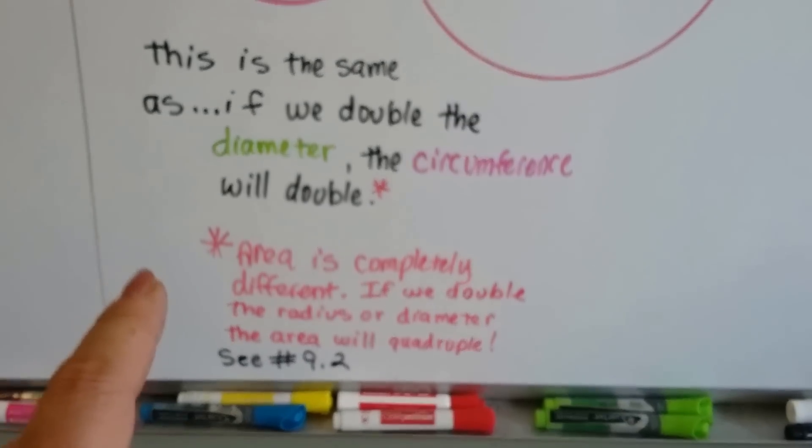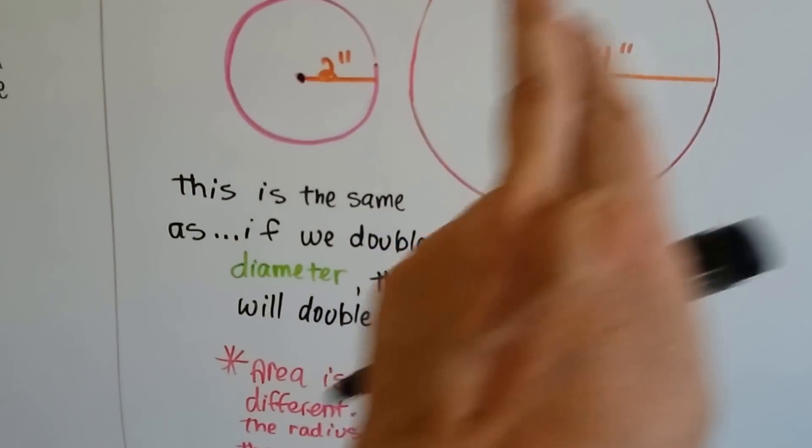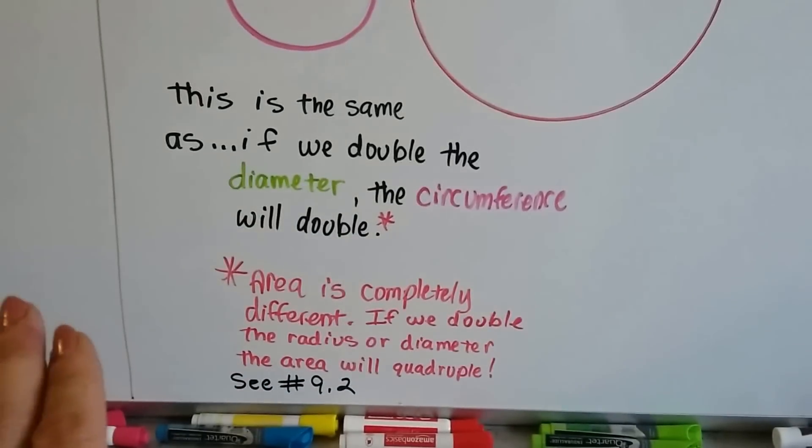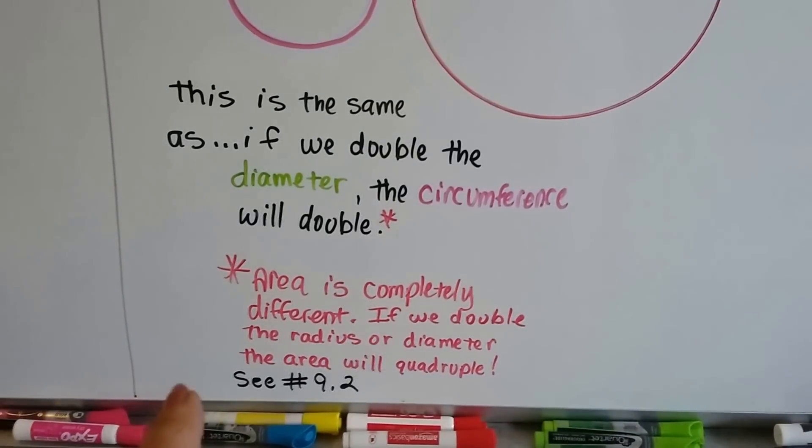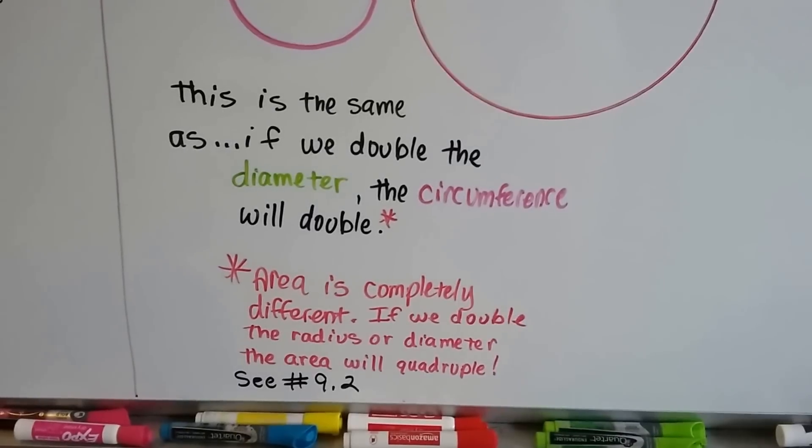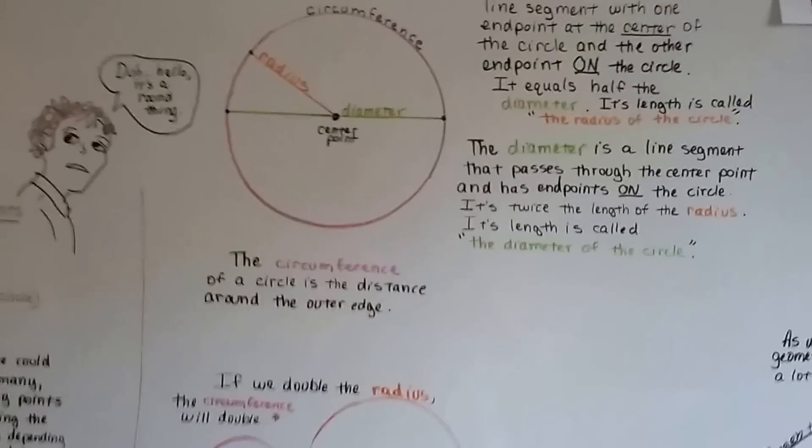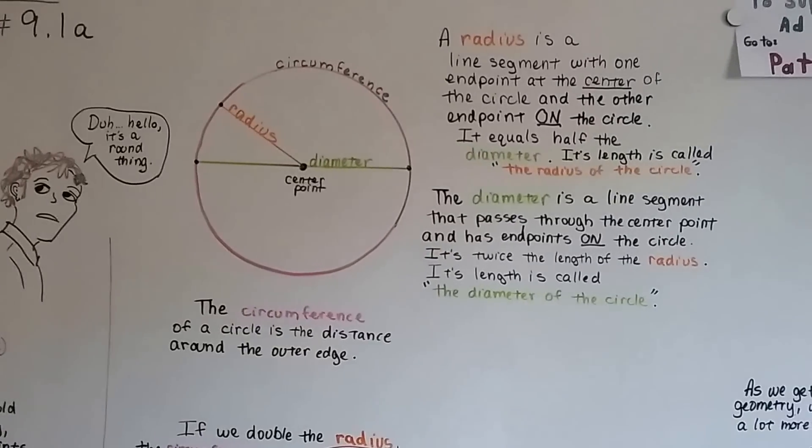But when we start talking about the area, the space inside the circle, that's a whole different story. If we double the radius or diameter, the area is going to quadruple. And we'll talk about that in number 9.2. So those are the four main parts that we're going to talk about: the circumference, the radius, the diameter, and that center point.